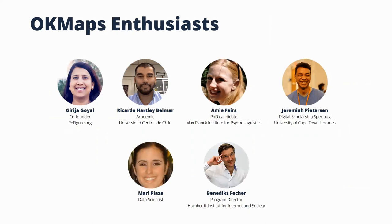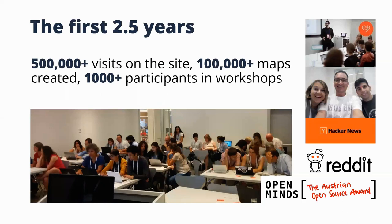We're also very happy to have Wikimedia Austria and Wikimedia Germany on board. Our first step into participatory development are the Open Knowledge Maps Enthusiasts — power users and ambassadors who conduct workshops and trainings in their communities and report feedback back to us. In our first two and a half years, we've had more than 500,000 visits, more than 100,000 maps created, and over 1,000 participants in workshops and sessions.